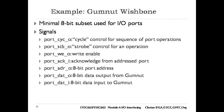Example: Gumnet Wishbone signals. Port_CYC_O is a cycle control signal indicating that a sequence of IO port operations is in progress. Port_STB_O is a strobe control signal indicating an IO port operation is in progress. Port_WE_O is a write-enable control signal indicating the operation is an IO port write. Port_ACK_I is a status signal indicating that the IO port acknowledges completion of the operation. Port_ADR_O carries the 8-bit port address, Port_DAT_O carries the 8-bit data written by an OUT instruction, and Port_DAT_I carries the 8-bit data read by an INP instruction.